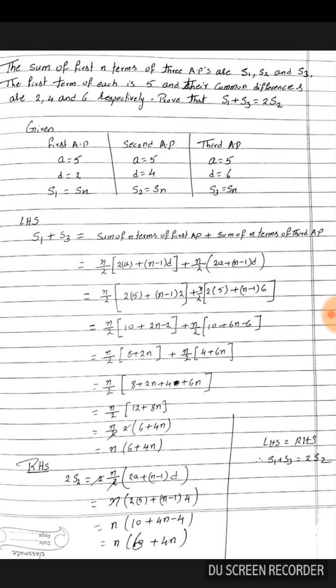When calculating, take n by 2 as common, so we get n by 2 times 6 plus 4n. I hope you understood this one.